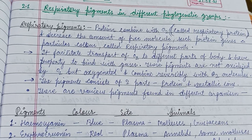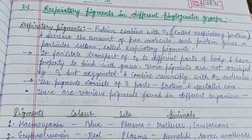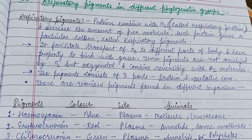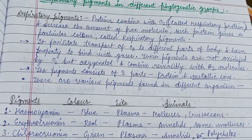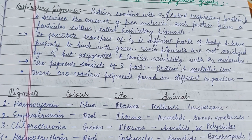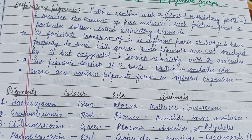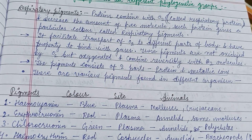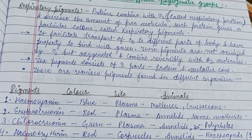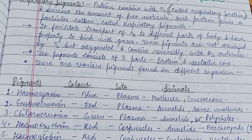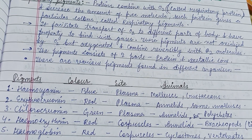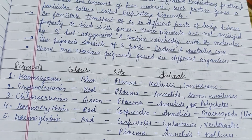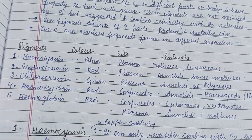Welcome to my channel. This video is about respiratory pigments in different phylogenetic groups. Respiratory pigments are made up of protein and a metallic ion, which combines with oxygen and decreases the amount of free oxygen molecules. Such proteins give a particular color, called the respiratory pigment.